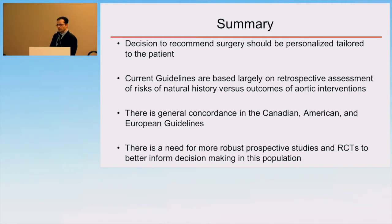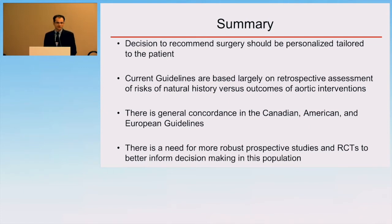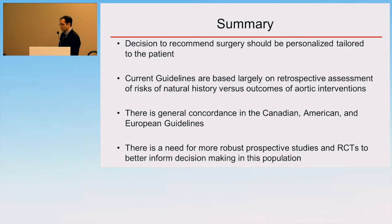We are not the only ones to deal with this problem in the thoracic aortic disease literature. Our vascular surgery colleagues have addressed this in small aortic aneurysms of the abdominal aorta, and large randomized trials now really do inform the size threshold there. This is basically a call to action to all of us involved in this disease to be more involved in randomized trials in this population.